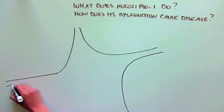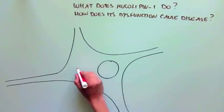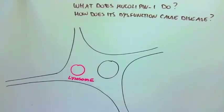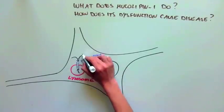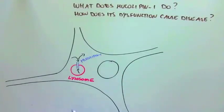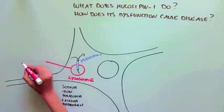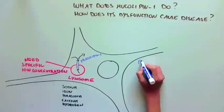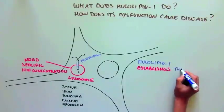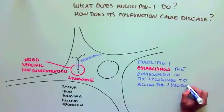Mucolipin-1 is a protein that is localized to a compartment inside cells called the lysosome. In the lysosome, mucolipin-1 spans the membrane and controls the flow of ions in and out of the lysosome, including sodium, iron, potassium, calcium, and hydrogen. Because lots of things happen in the lysosome that require a very specific concentration of certain ions, mucolipin-1 is important to establish this environment and to allow the lysosome to perform its intended function.